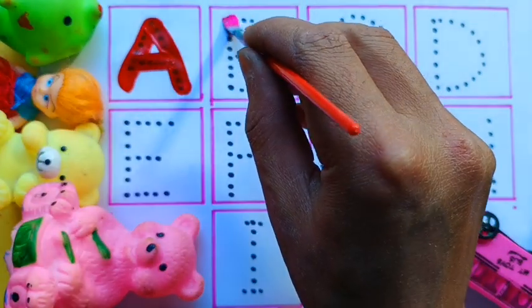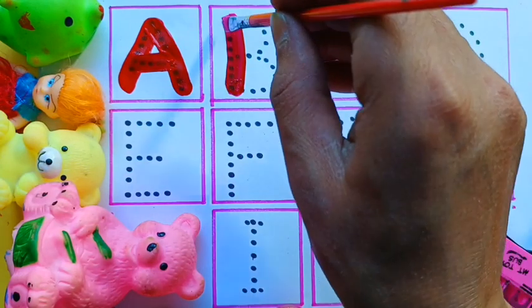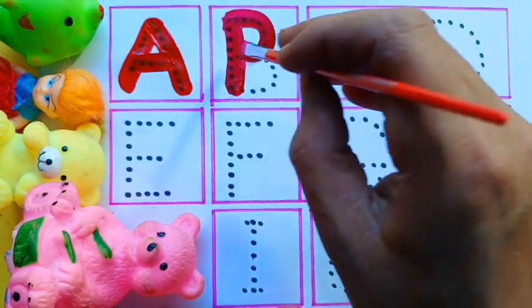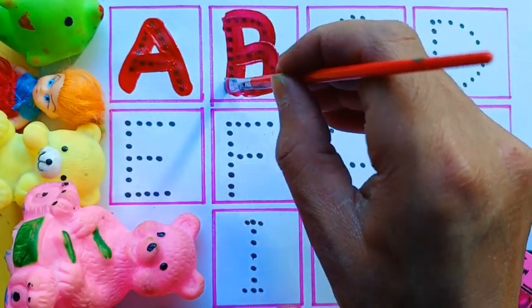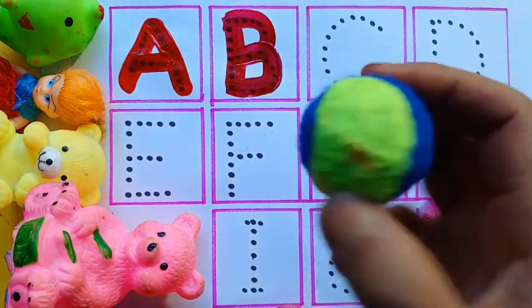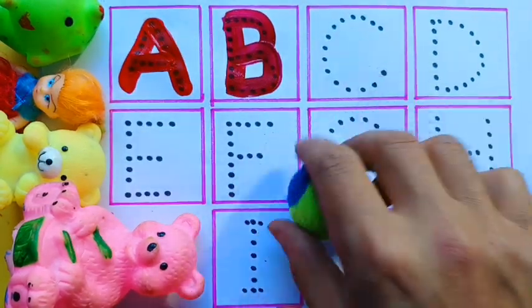B. W, X, Y, and Z. Now I know my A, B, C. B for ball, B for ball.